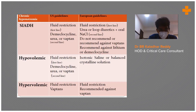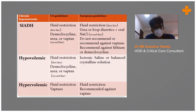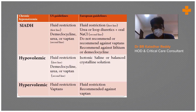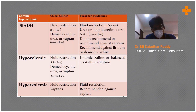The treatment for SIADH: first line is fluid restriction; second line includes demeclocycline, urea, or vaptans. For hypovolemic hyponatremia, fluid restriction is the first line as per US guidelines, but European guidelines recommend isotonic saline or balanced crystalloid solutions. For hypervolemic hyponatremia, it is always fluid restriction or vaptans.